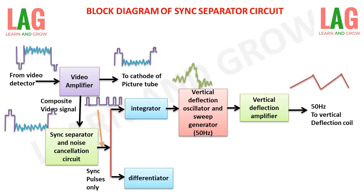The synchronizing pulse is at a frequency of 50 Hz. The waveform obtained at the output of the vertical deflection amplifier is a sawtooth wave which has a frequency of 50 Hz, and it is used to scan the synchronizing signals in the picture tube from top to bottom and vice versa.